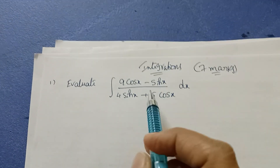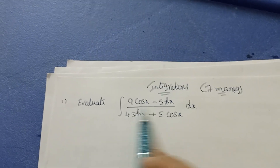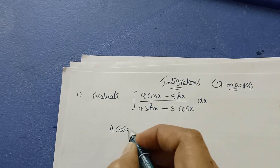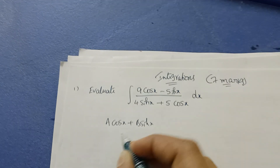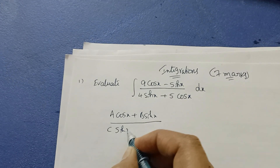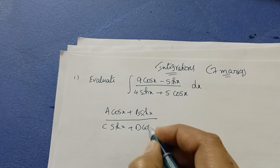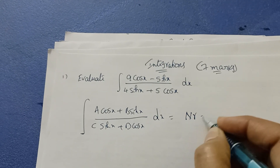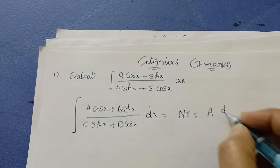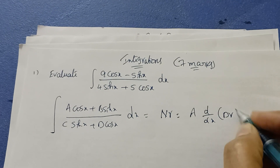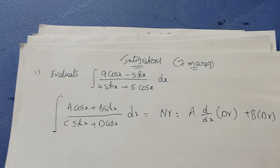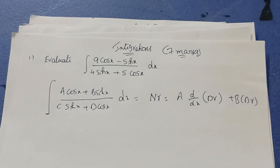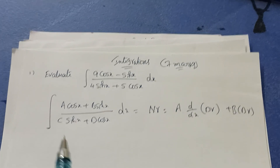In this type of question, the procedure is: numerator equals a times d/dx of denominator, plus b times denominator. You find out these a and b values, then split them, then apply integration. That is the procedure for this type of question.